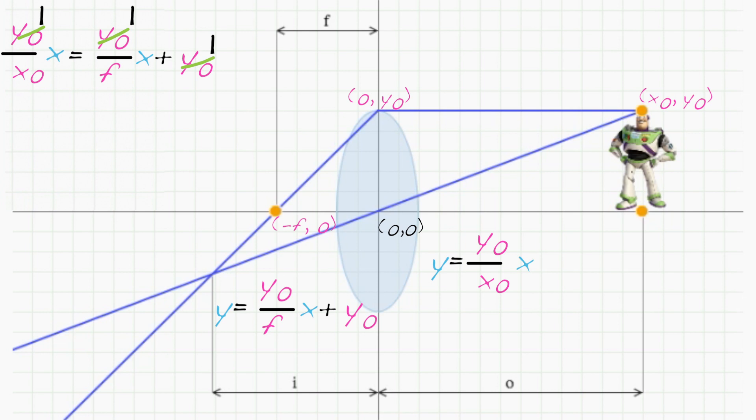And now let's divide through by x, which gives us 1 over x0 equals 1 over f plus 1 over x.